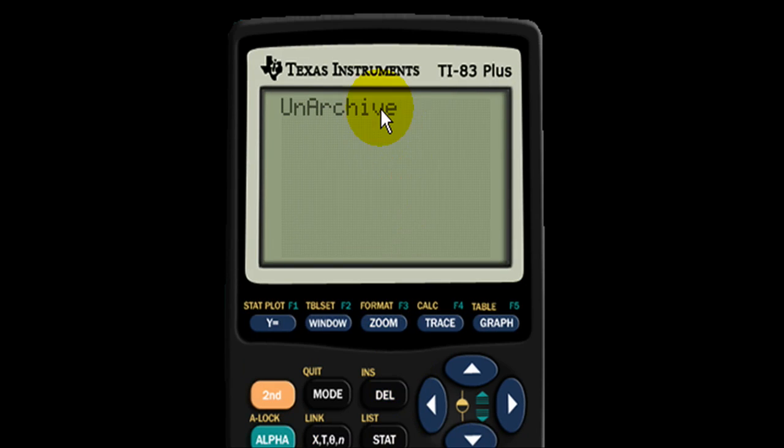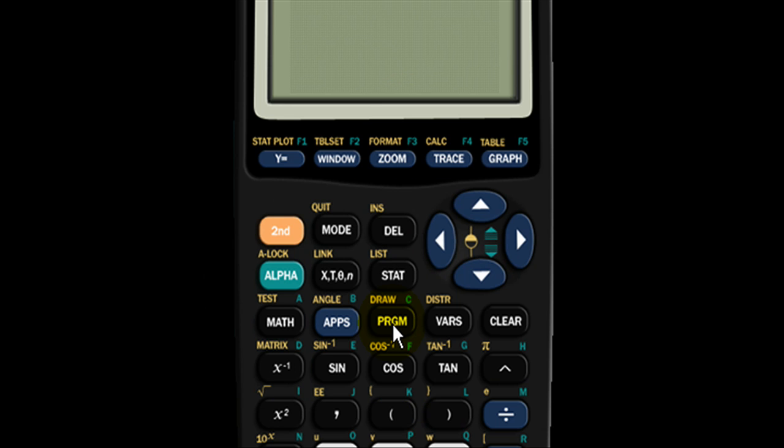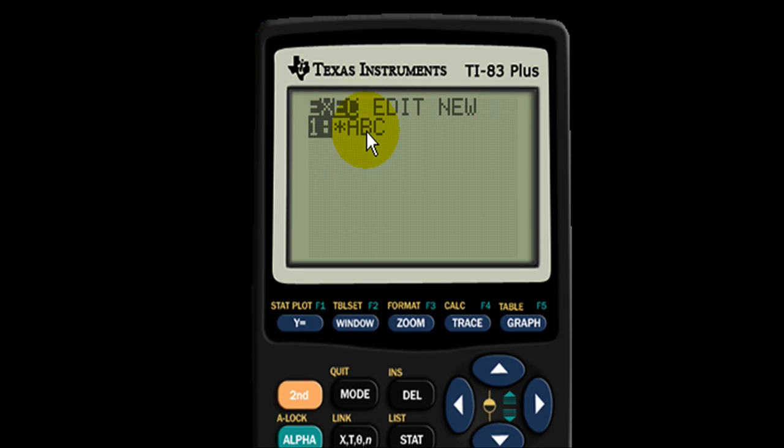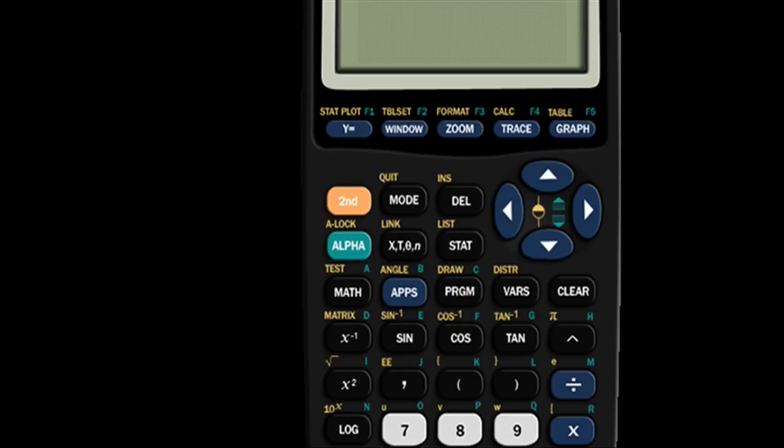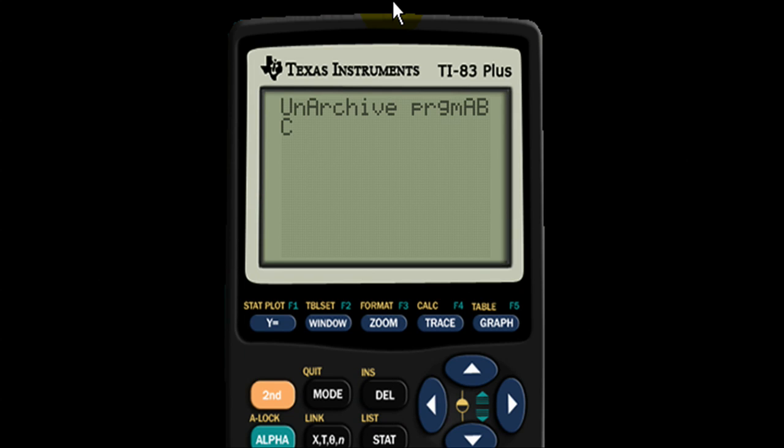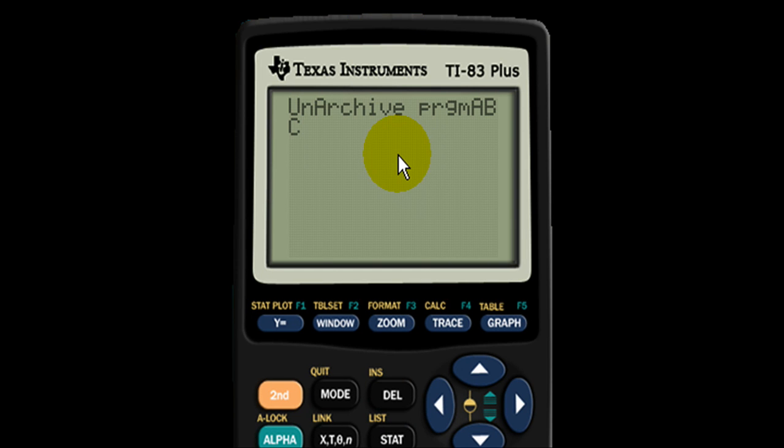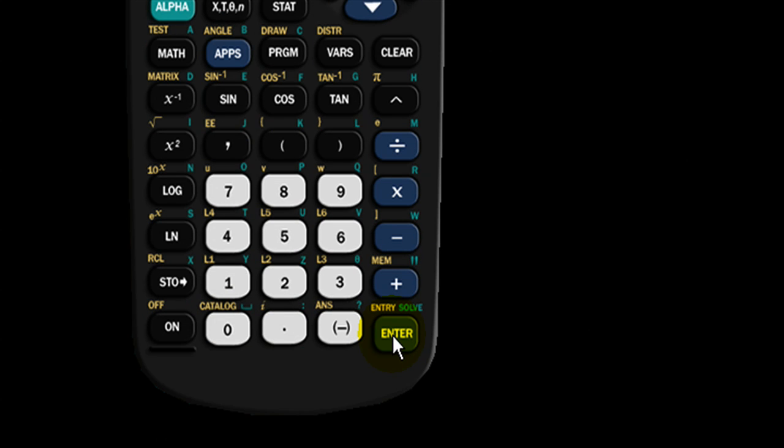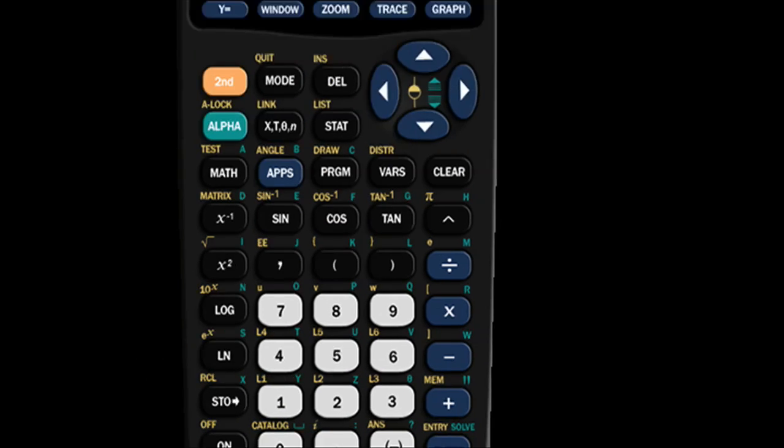So after you get this screen you want to go to program, click the program button, and then just hit one or whatever the name of your program is. ABC one is selected. Hit one on your calculator. The screen will say unarchive program ABC. Yes you want to unarchive it. So click enter, hit enter the button on your calculator and the screen will say done.